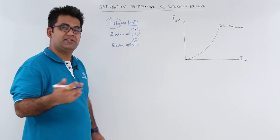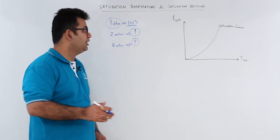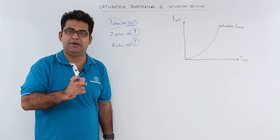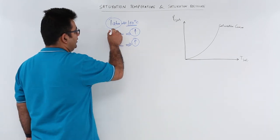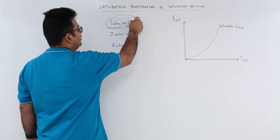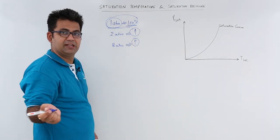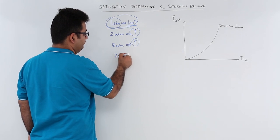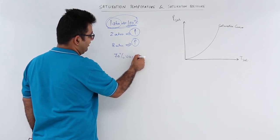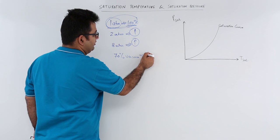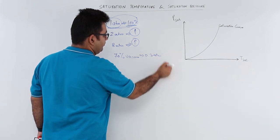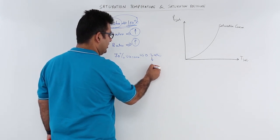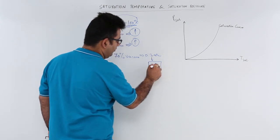The same can be said if you decrease the pressure — if you decrease the pressure, the temperature at which boiling takes place will also decrease. For example, at atmospheric pressure we have a boiling point of 100 degrees Celsius. If you decrease it, let us say you have 70% vacuum, which is 0.3 atm, then at around 30 degrees Celsius you have your boiling — just a random figure I am giving.